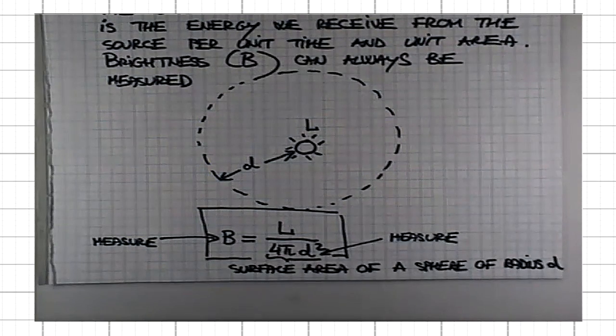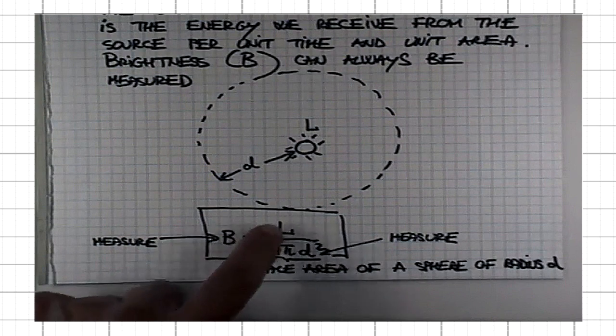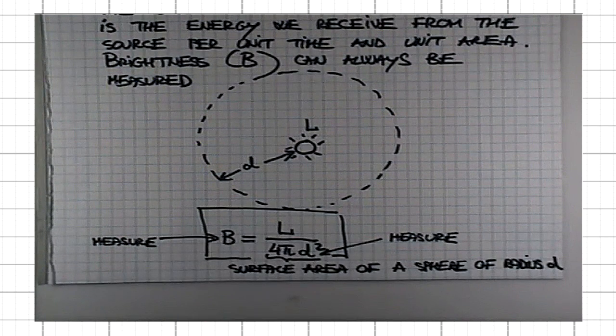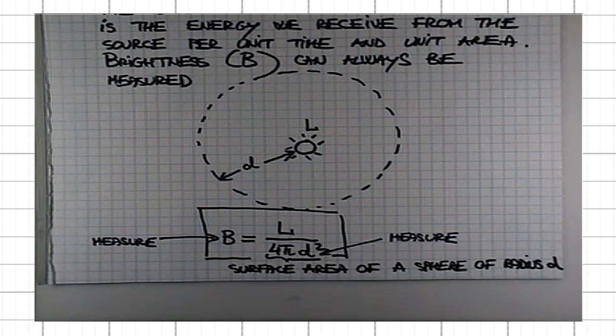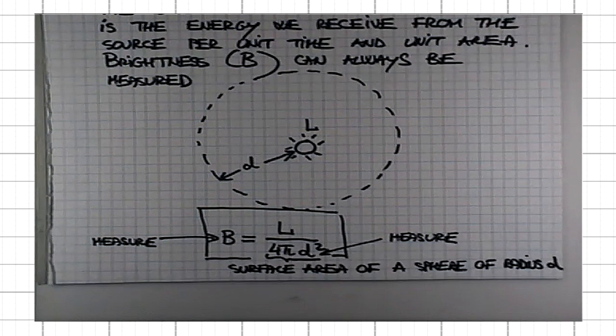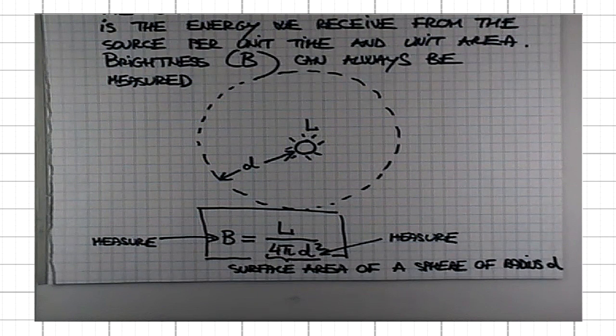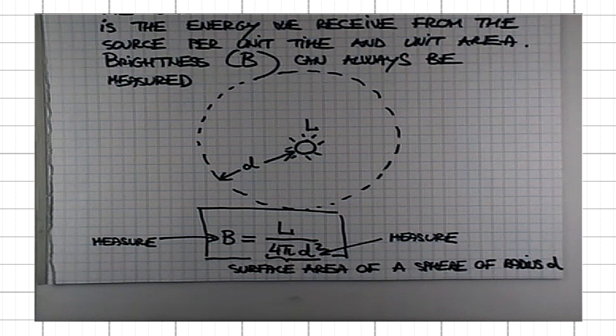Then, using this relationship, we can find out what the luminosity of the sun is. In fact, that's how we know what the energy output of the sun is.